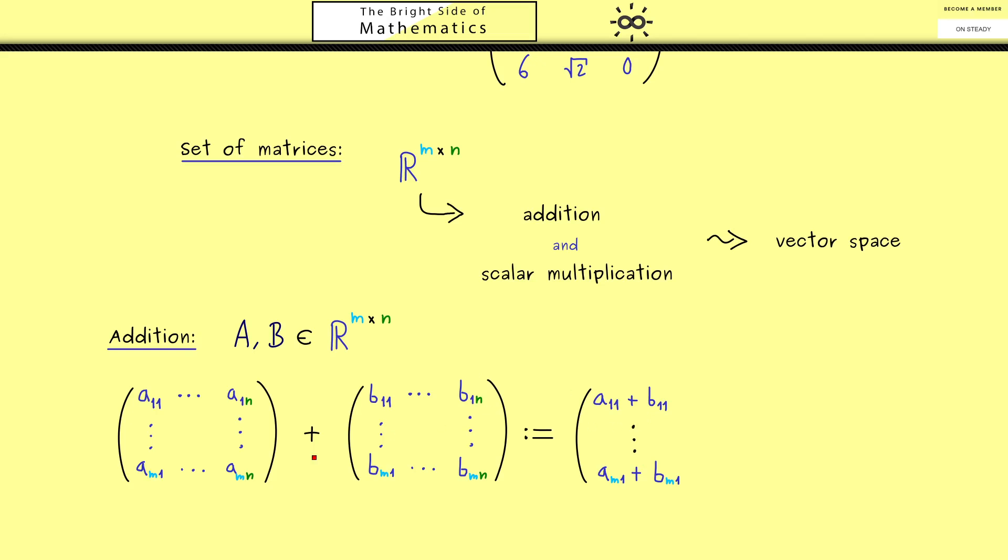And now we just define it by using the normal addition of real numbers in each entry. So more precisely in the first entry we have a_11 plus b_11. And then you see we can do this for each position here. So in the end you should see this is not complicated at all. It's like the normal addition but at m times n positions.